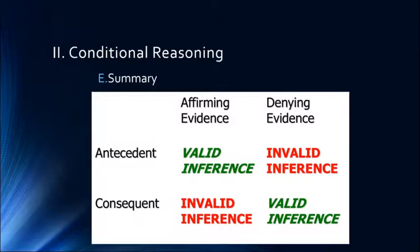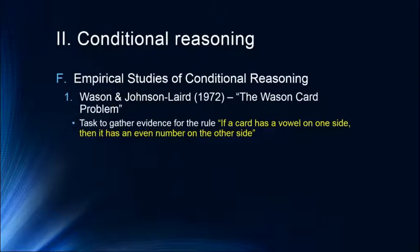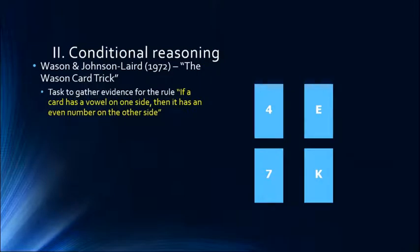To summarize: affirming the antecedent and denying the consequent are the two ways to make valid inferences. This is important because it tells us what kind of information to gather in applied situations. This brings us to the Wason card problem: if a card has a vowel on one side, then it has an even number on the other side. We're presented with four cards — which ones do we turn over?